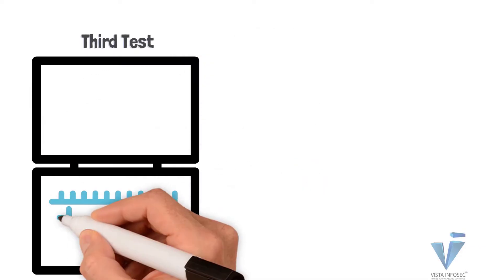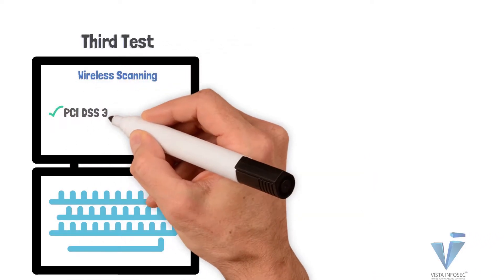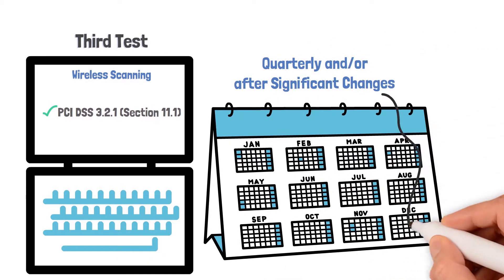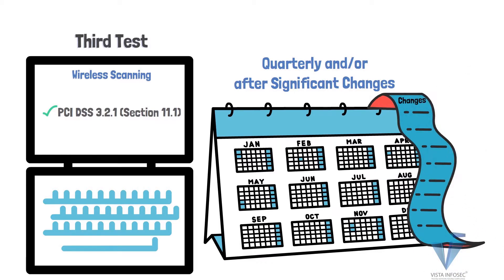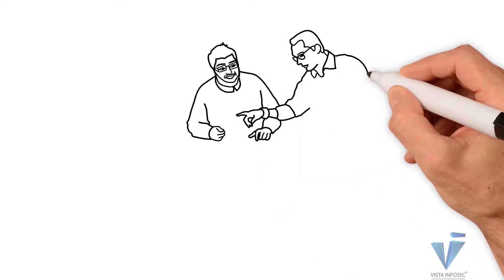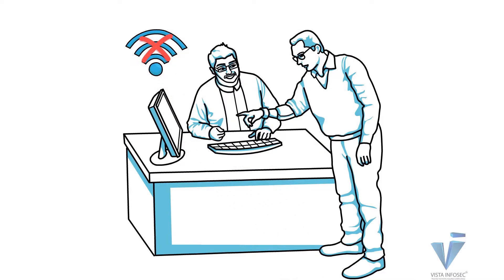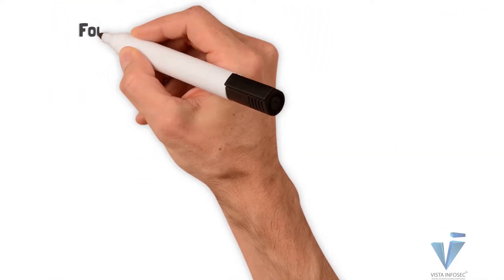The next is wireless scanning of your premises, under section 11.1 of PCI DSS 3.2.1, again quarterly and/or after significant changes. A word of caution: you might say you don't have any wireless in your card data environment and want to take an exception — you cannot. This requirement is meant to confirm that your status quo remains status quo. If you don't have wireless, these reports will prove that you don't have wireless in your card data environment.